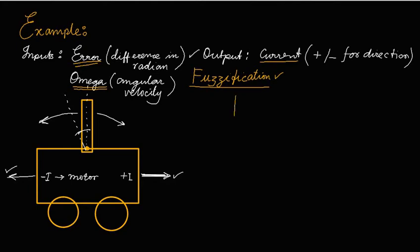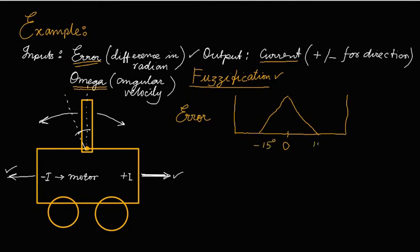Let us assume that the error has a membership function such that when error is 0, its membership value is 1. If it goes up to minus 15 degrees to plus 15 degrees, this is the plot for the membership function when we say that error is zero — meaning if we are getting some angle, it still has some membership value between 0 and 1.